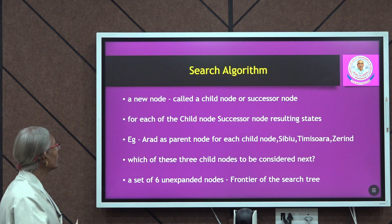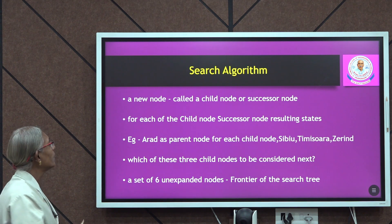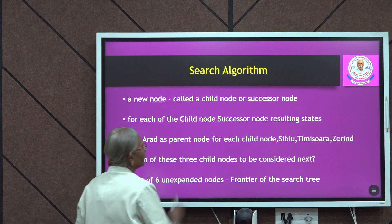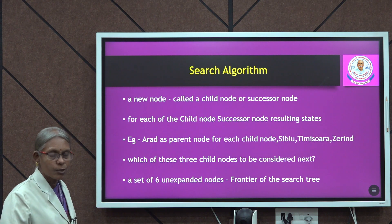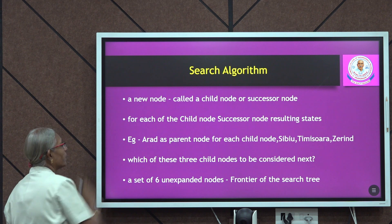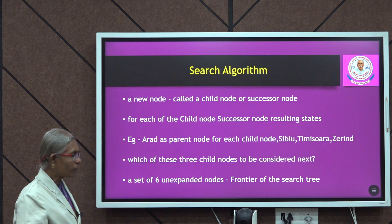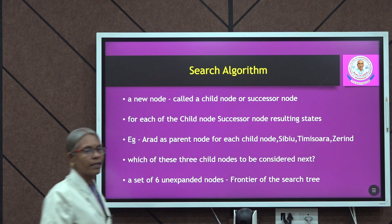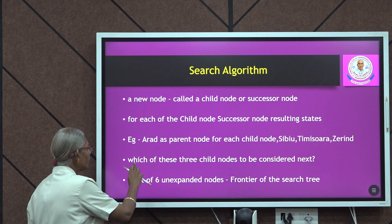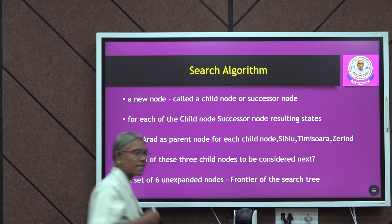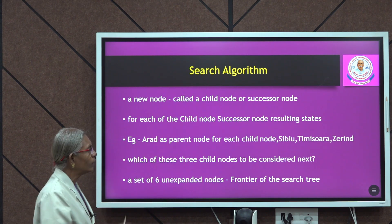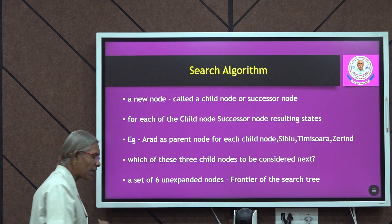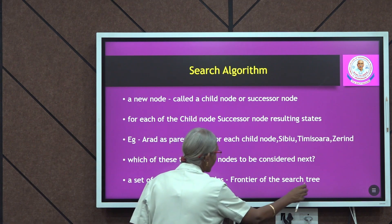Now let us look at the algorithm. A new node is generated, called a child node or successor node. For each child node there is a successor node resulting in states. For example, Arad is the parent node, and Sibiu, Timisoara, and Zerind are its child nodes. The question is which of these three child nodes to consider next. The unexpanded nodes are called the frontier of the search tree.